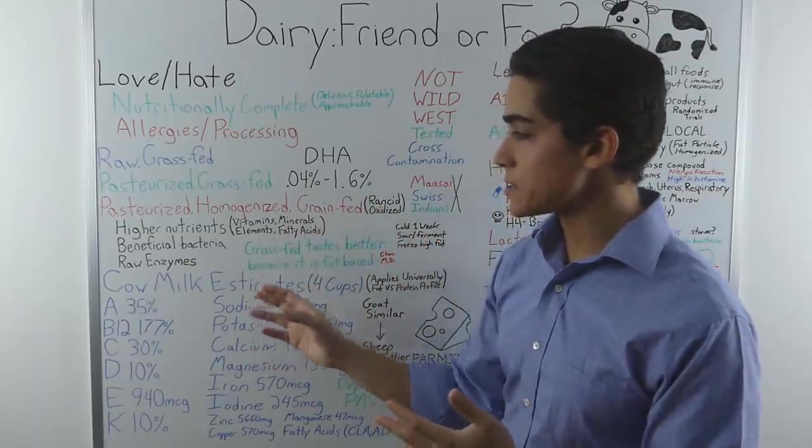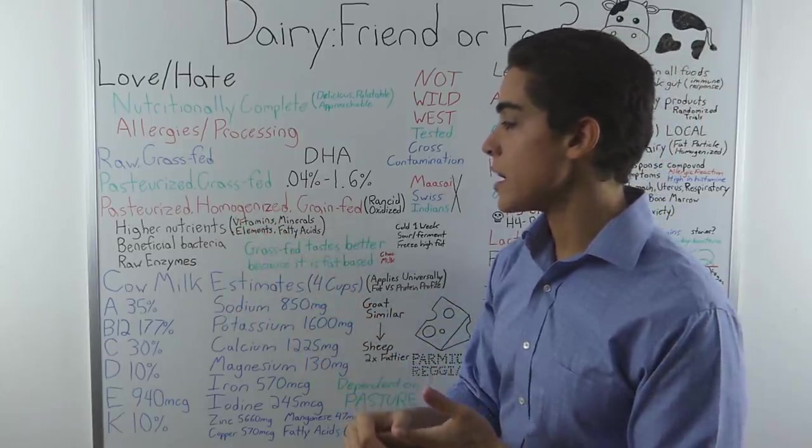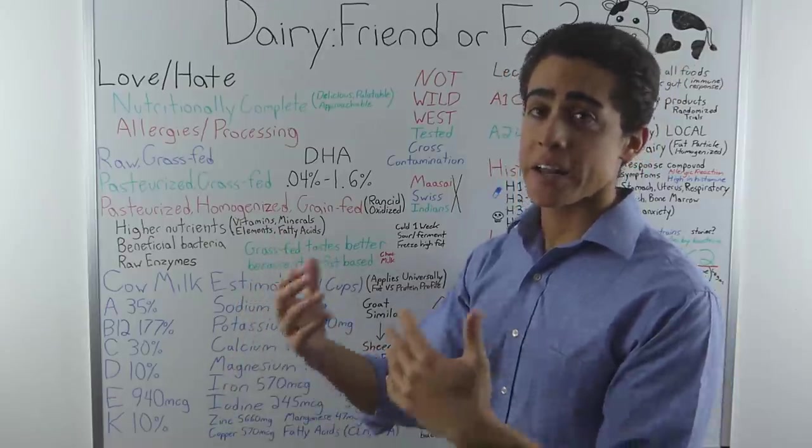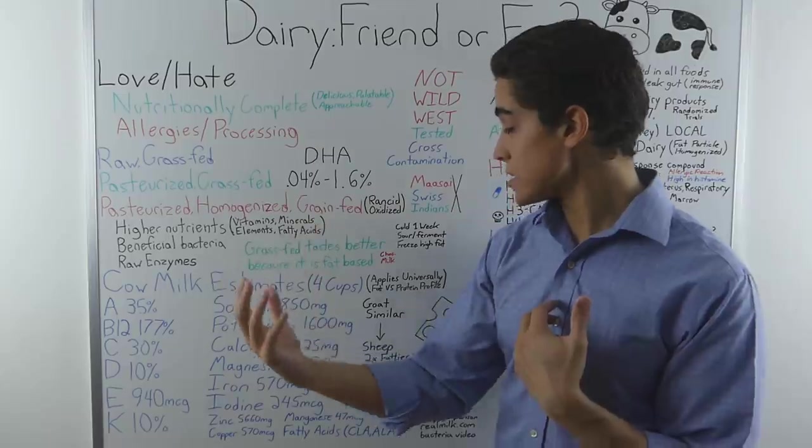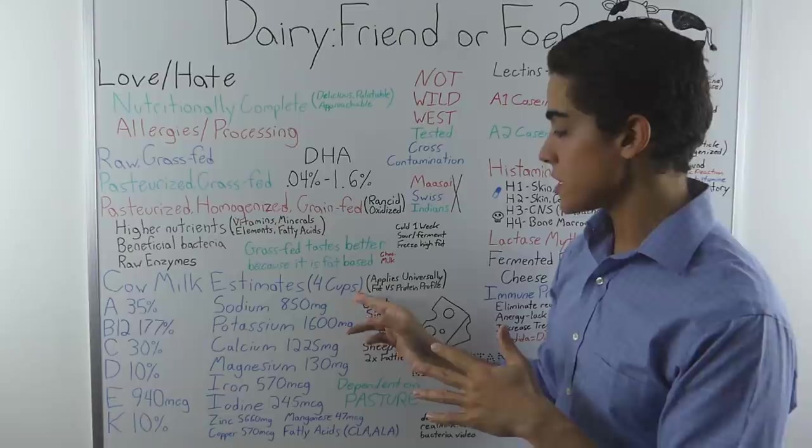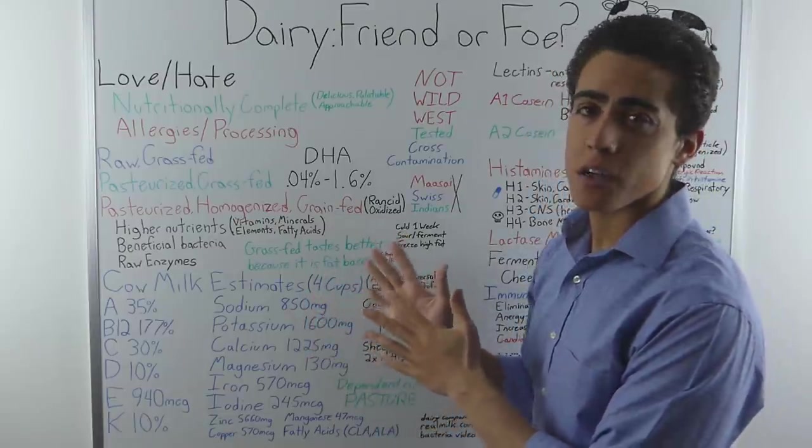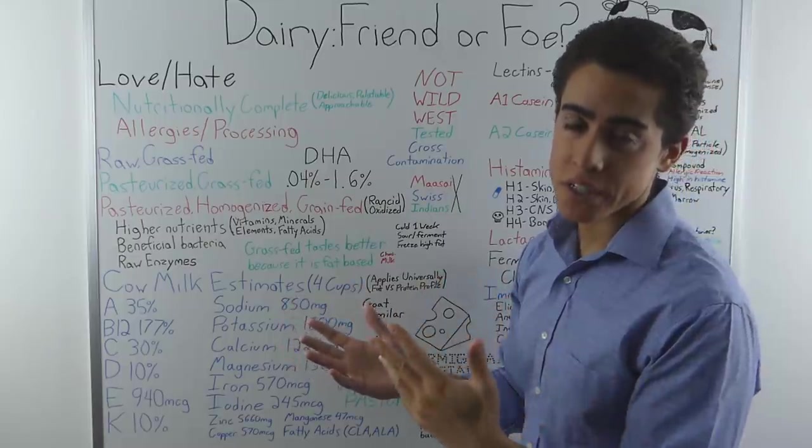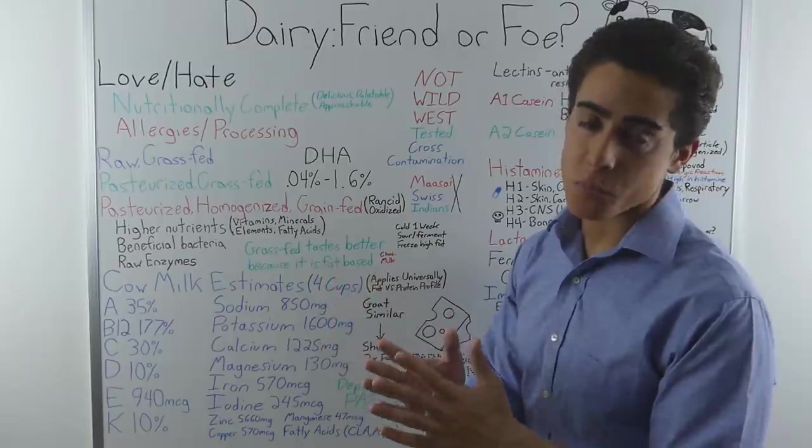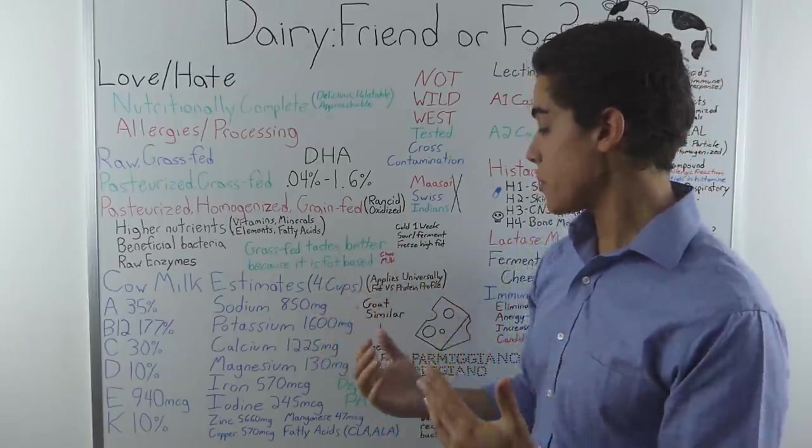So just to summarize, raw grass-fed dairy is higher in nutrients. It has beneficial bacteria and raw dairy digests better because of enzymes in both the dairy and our bodies digesting it easier. Now, here are some nutrient estimates that I accumulated from a variety of sources. This is for four cups of milk. I figured that was a pretty good amount, if someone did drink raw dairy or consume raw dairy in their diet. Four cups seems to be accurate corresponding to an amount of dairy, butter, cream, cheese, or anything that people would consume.